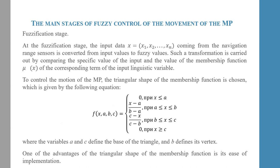Fuzzification stage. At this stage, the input data coming from the navigation range sensor is converted from input values to fuzzy values. This is carried out by comparing the specific values of input and the membership function values of the corresponding term of input linguistic variables.